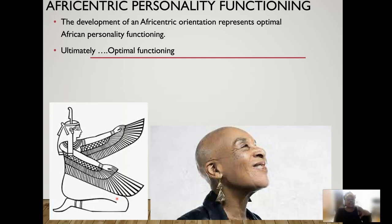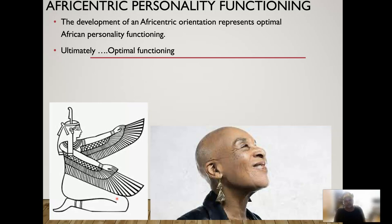We'll look at Afrocentric personality functioning such as the development of an Afrocentric orientation that represents optimal African personality functioning. What does optimal functioning for the African person look like and how does it manifest? We can better analyze deviations from optimal functioning once we first understand what is optimal for the African. That concludes this mini-series. I'm your professor, Dr. Niko Slater. Peace.